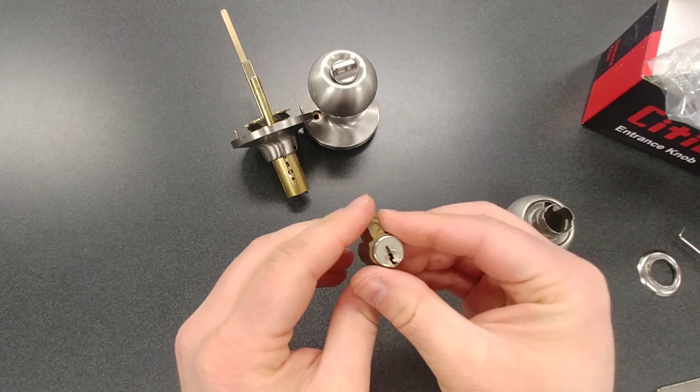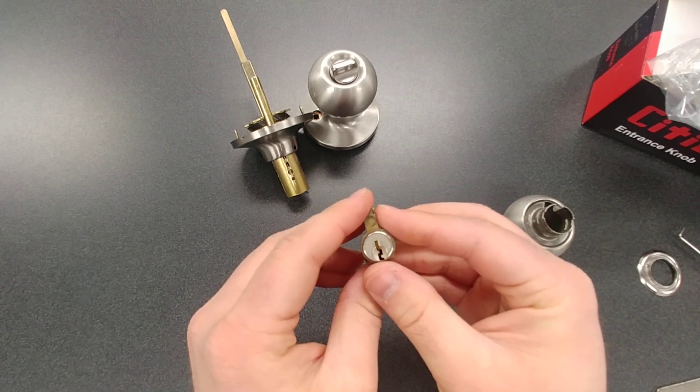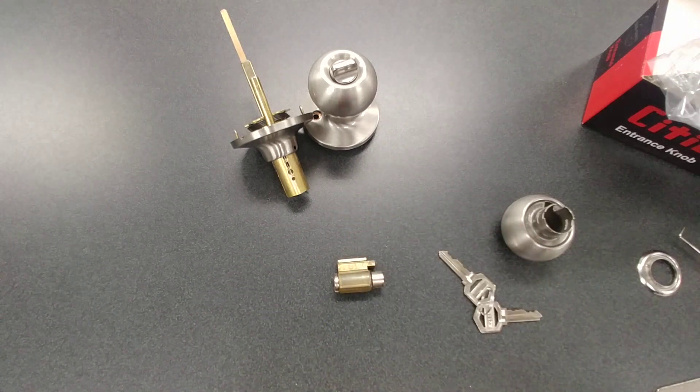So that's how you take apart a CityLock knob or a lever to re-key it. Thanks for watching, and we'll see you next time.